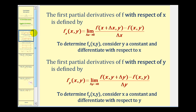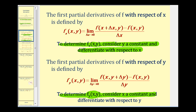Here we see the limit definitions of the partial derivatives with respect to x and with respect to y. But we're not going to determine partial derivatives in this video in this way. To determine the partial derivative of f with respect to x, we'll consider y a constant and differentiate with respect to x. And to find the partial derivative of f with respect to y, we'll consider x a constant and differentiate with respect to y.